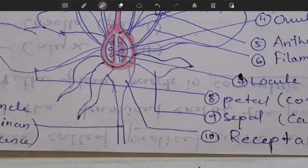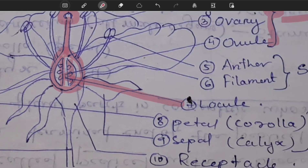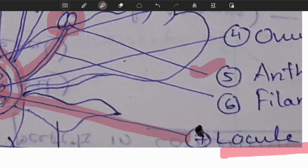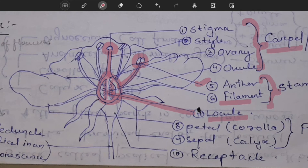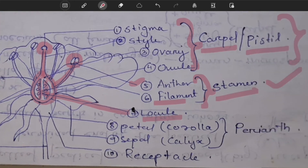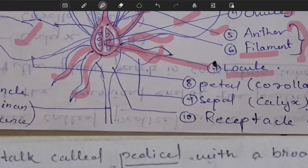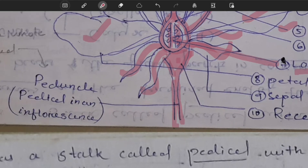At the center of the ovary there is the locule. The anther is connected by a stock called the filament. Together, the filament and anther constitute the stamen, which is the male reproductive structure of the flower. The petals form the corolla, and the sepals form the calyx. The receptacle is the broad part, and the stock below it is known as the pedicel.